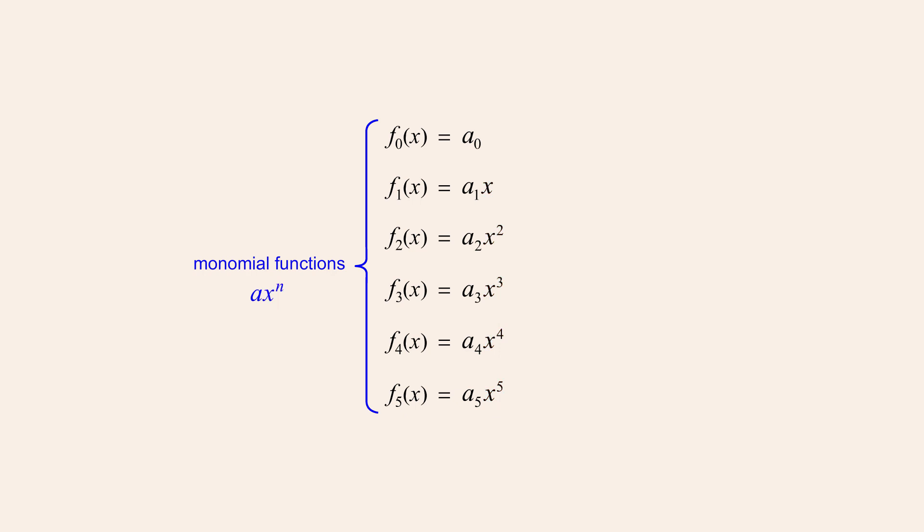Although in this example two of these monomial functions don't appear to include x with an integer exponent, variables written with no exponent are understood to have an implied exponent of one. And even though x does not appear in the first monomial, a-sub-zero can be thought of as the coefficient of x to the zero power, since in algebra, variables with an exponent of zero are defined as one.